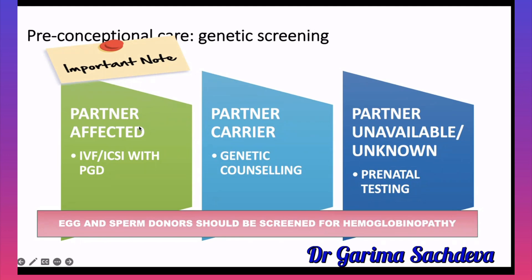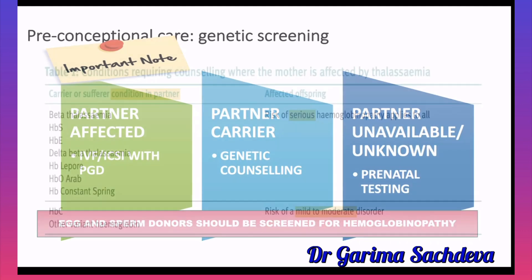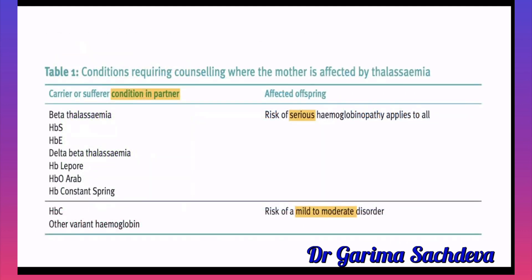Because thalassemia is genetically inherited, genetic screening is important. If both the patient and partner are affected, offer IVF with pre-implantation genetic diagnosis (PGD), where embryos are tested to determine if the baby carries the condition. If the partner is a carrier, genetic counseling is offered. If partner status is unknown, prenatal testing is done. Egg and sperm donors should also be screened. Serious hemoglobinopathies include beta thalassemia, HbS, HbE, delta thalassemia; HbC is a mild variant.